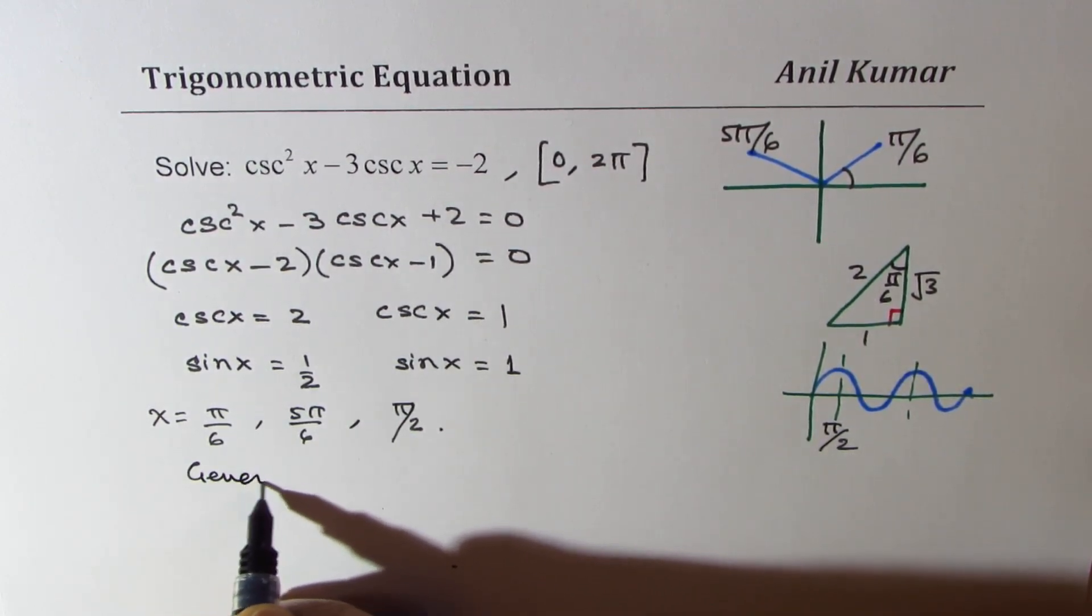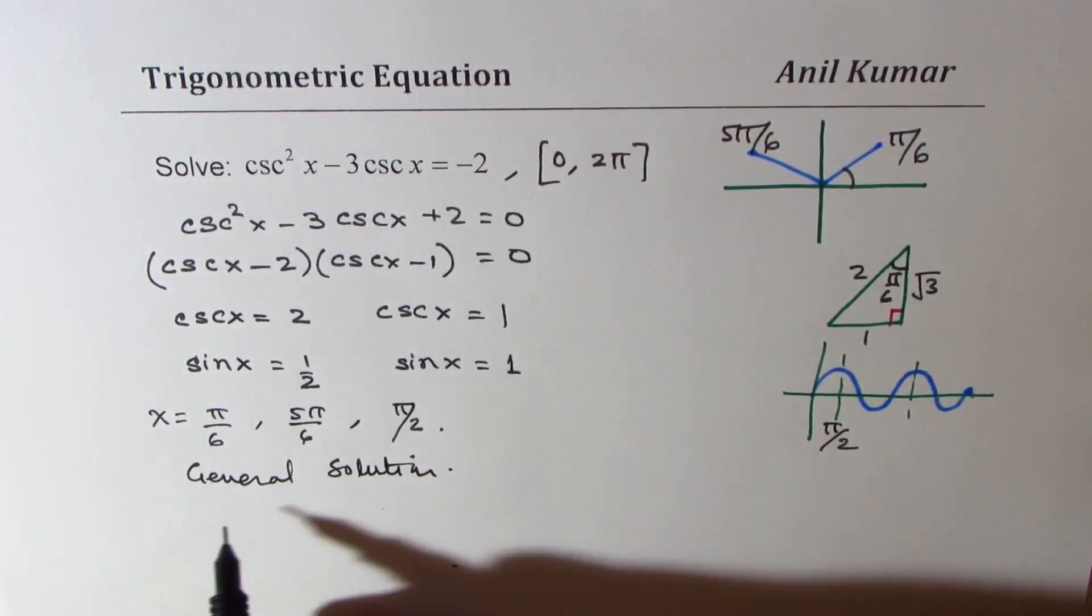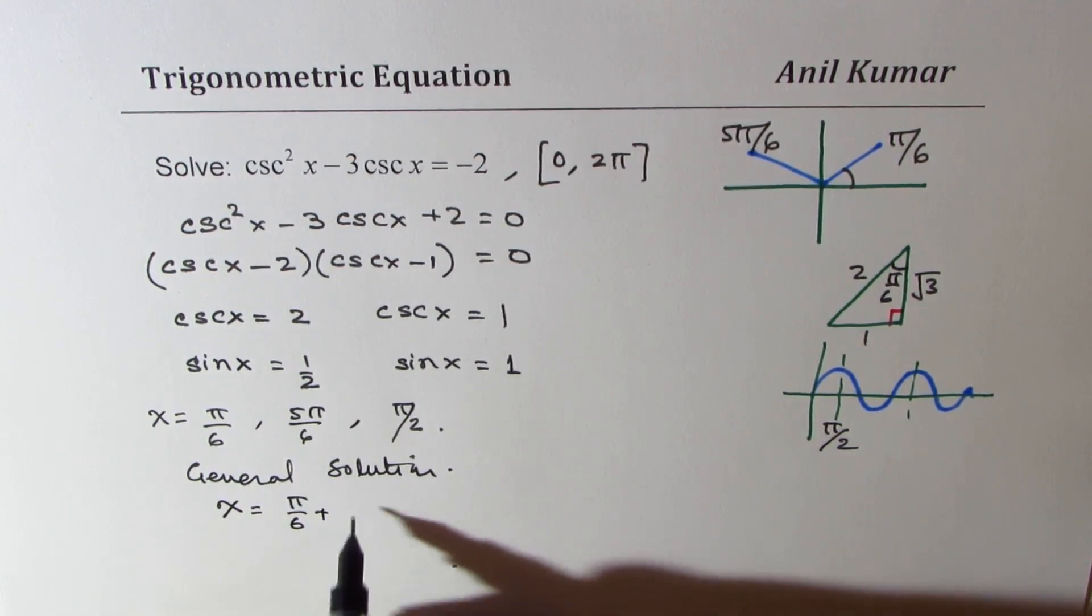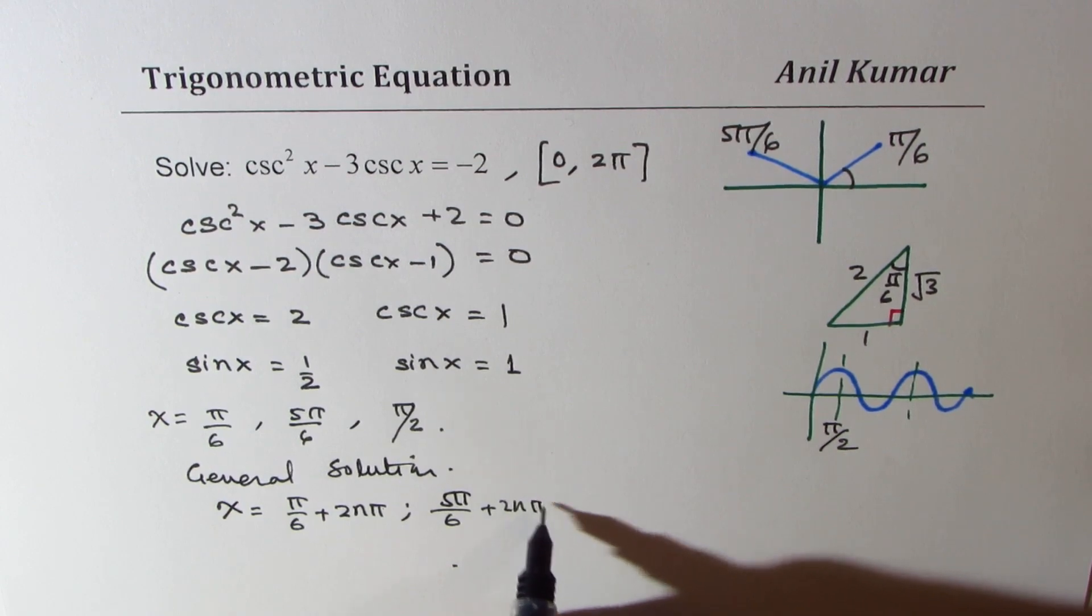In that case, x will be equal to pi by 6 plus 2n pi, 5 pi by 6 plus 2n pi, and pi by 2.